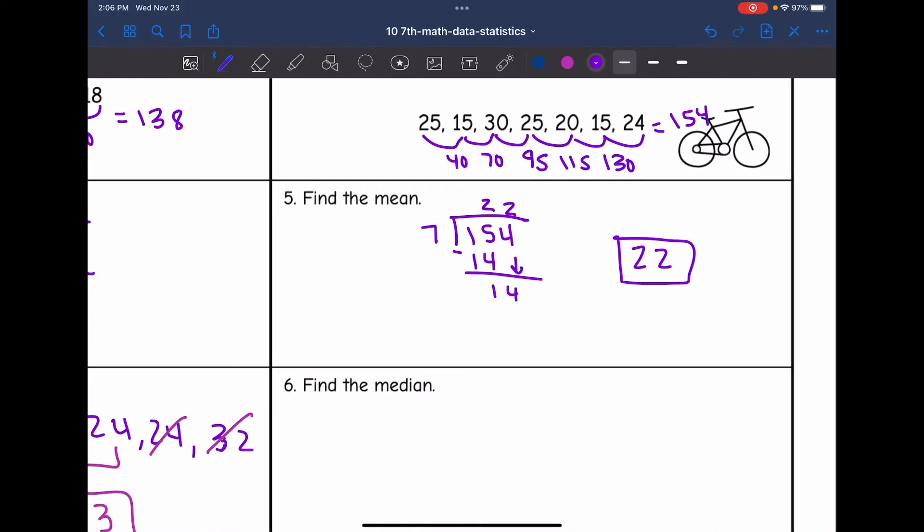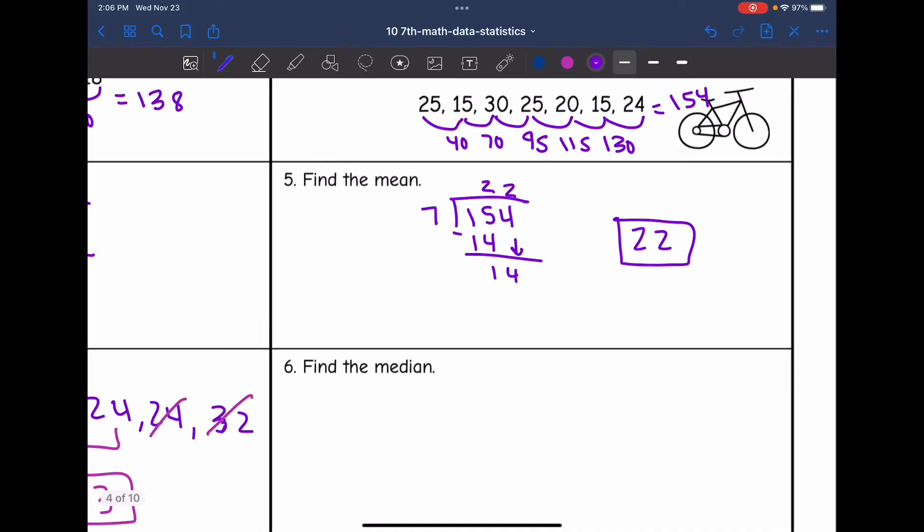Now I want to find the median. So I'm going to list the data from least to greatest. So the least numbers are 15. I have 2 of those. And then I see a 20, 24, 2, 25s, and a 30.